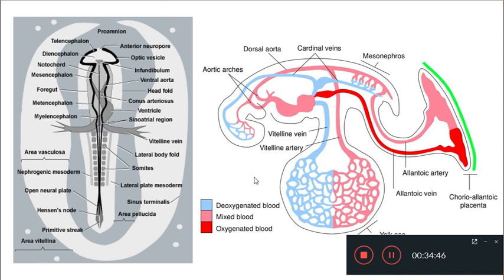One more change in the 33-hour chick embryo is the disappearance of the primitive streak. Gastrulation was initiated by the formation of the primitive streak, but as time advances it slowly regresses. By about 33 hours, the primitive streak disappears due to rapid growth of anterior structures and reduction in streak length, finally disappearing during development of the caudal region.